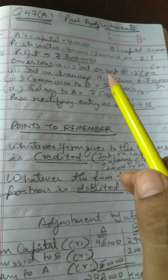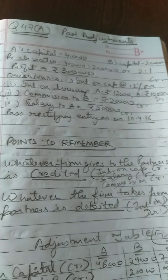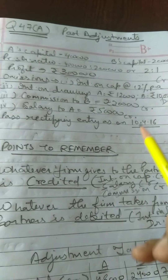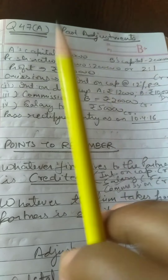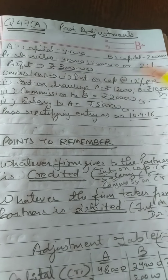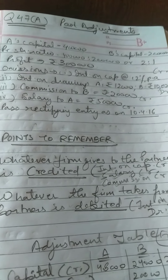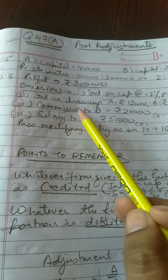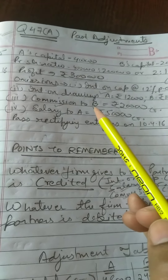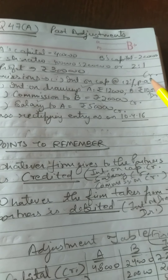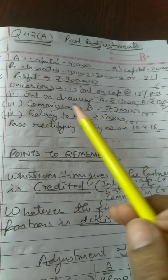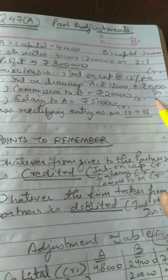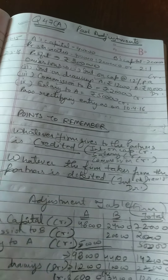Whatever the firm gives to the partners is shown as a credit amount, and whatever the firm takes from the partners is shown as a debit amount. Interest on capital is given by the firm to the partners — credit. Commission is also given by the firm — credit. Salary is also given by the firm — credit. Interest on drawings is taken by the firm from the partner — that is shown as a debit amount.